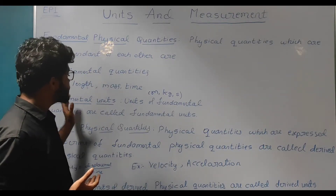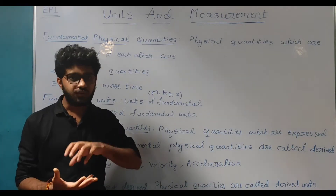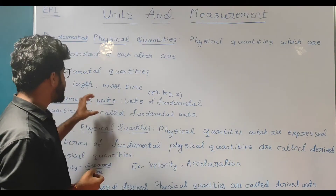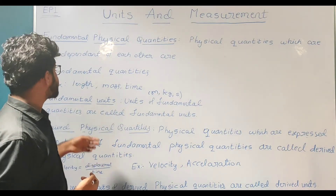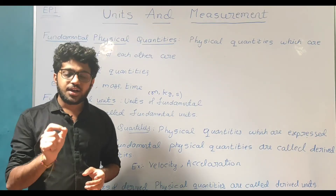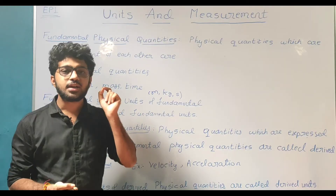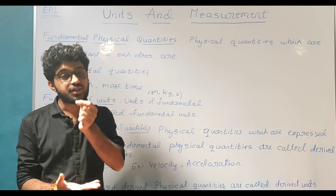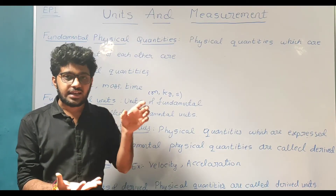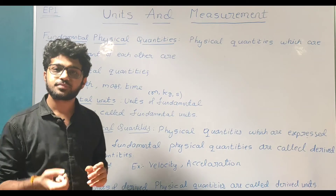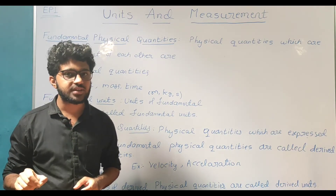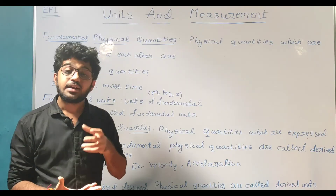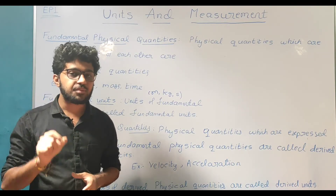Units of fundamental physical quantities are called fundamental units. Units which are independent of each other are called fundamental units. For example, the fundamental quantity length has the unit meter — so meter is the fundamental unit for length in SI. Mass is expressed in kg or grams, time in seconds, and temperature in kelvin. These are examples of fundamental units.